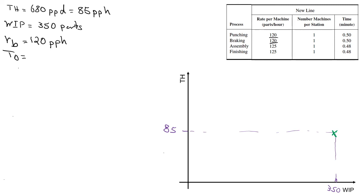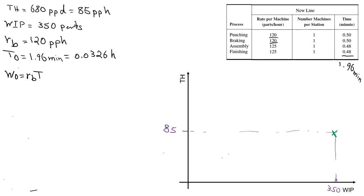The raw process time t0 is the sum of process times for all processes in the new line, which totals 1.96 minutes, or 0.0326 hours. The critical WIP is w0 = rb × t0 = 120 × 0.0326 ≈ 3.912 parts.